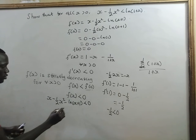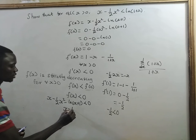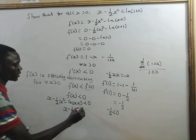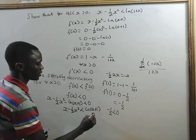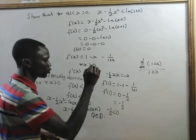So, let's regroup. We have x minus half of x squared is less than natural log of x plus 1. And that is to be shown.